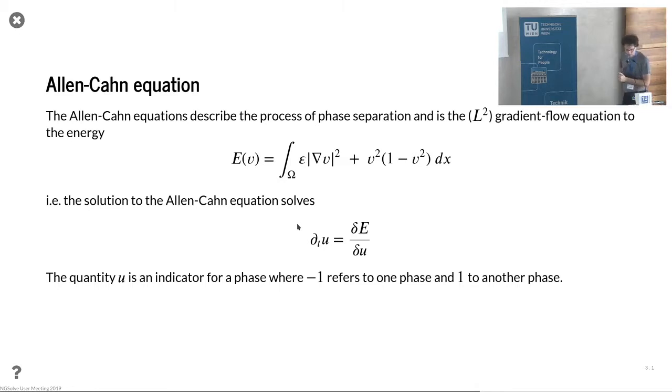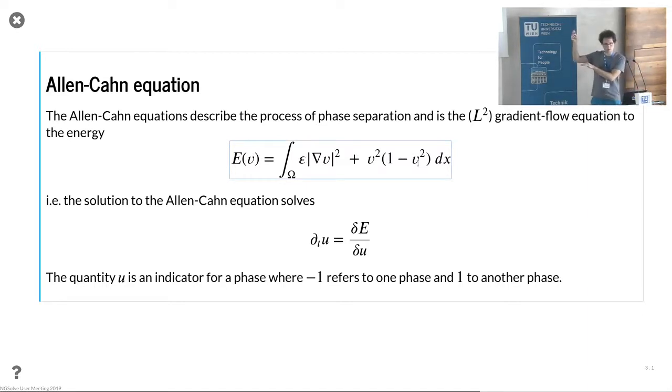Now it's coming from a phase separation modeling. So you want to have a function which is essentially constant - it should take the values one or minus one. So the energy penalizes gradients, so that leads to essentially being constant, and it penalizes being away from zero or one. Yeah, so that's what you have here. Then we do the gradient flow of this, so an L2 gradient flow. So that means we have an unsteady problem - the variable v describes the mixture of certain phases, and this kind of demixing of those guys corresponds to the minimization of the energy of that process somehow.